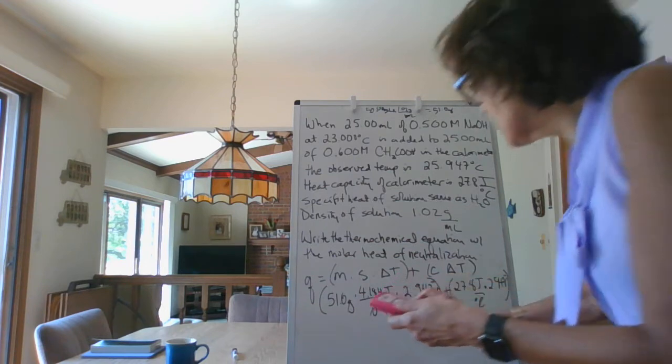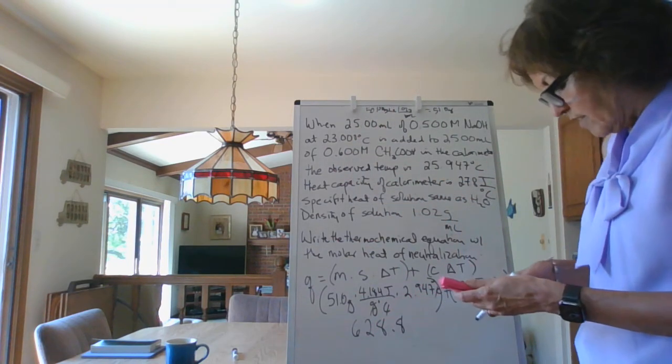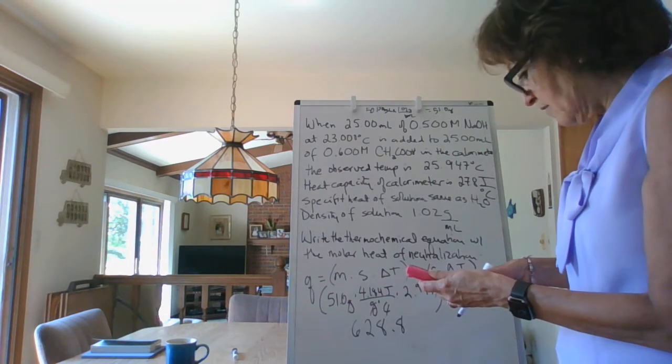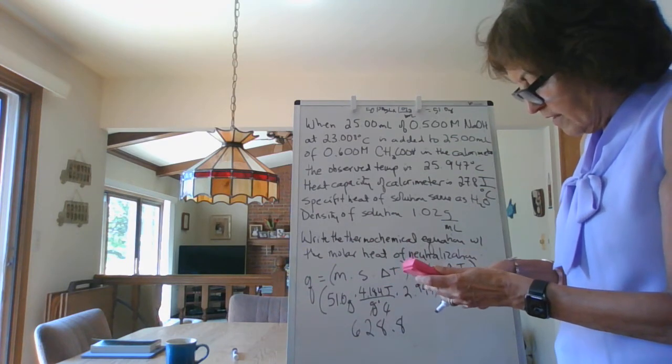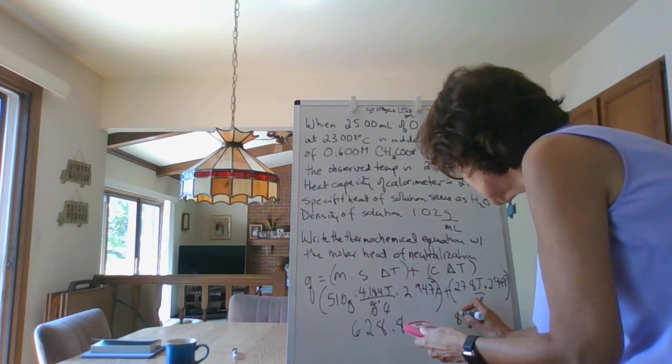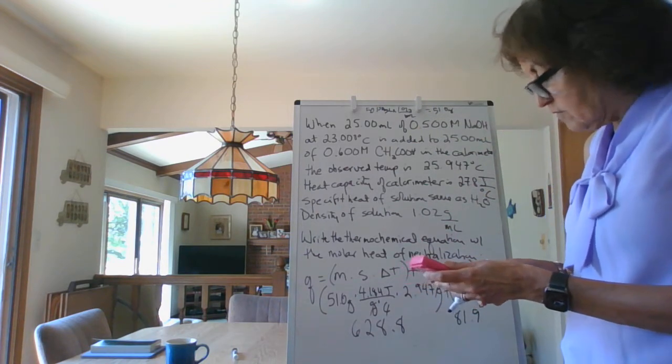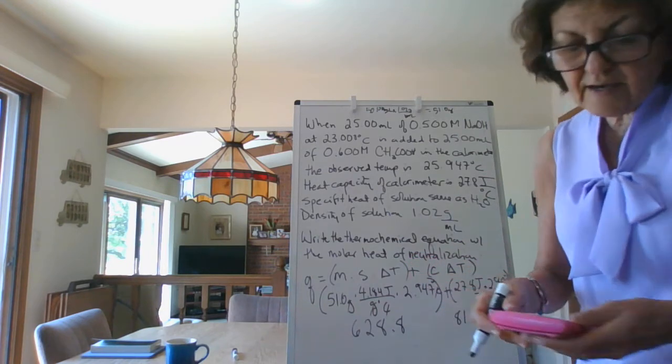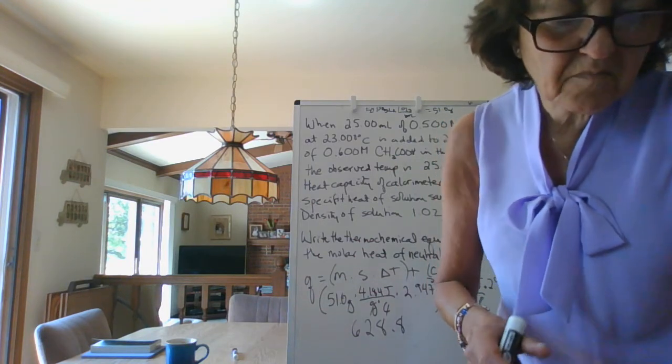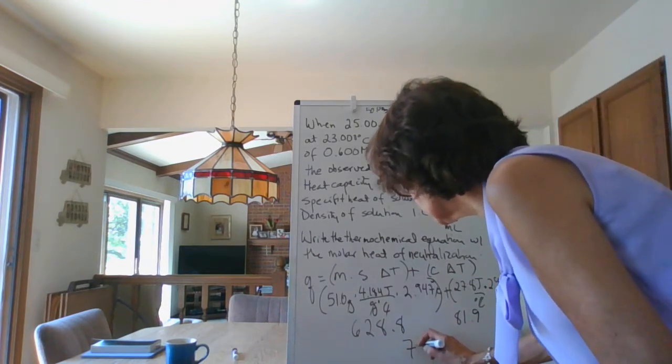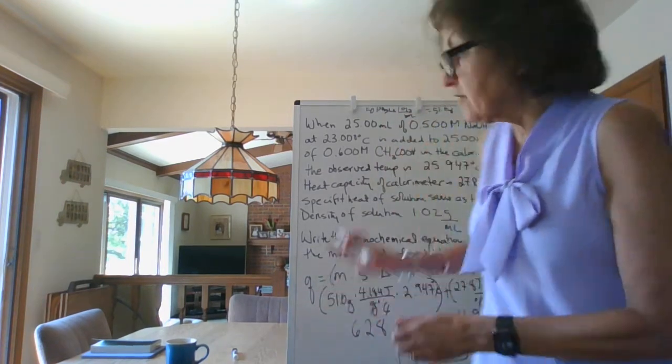So I've got for this 628.8, and then for this one I have 27.8 times 2.947 and I have 81.9. I'm going to add this to the 628.8 and I get 710.7. I'll go 711 joules. Okay, we're not done, we're just done with this part.